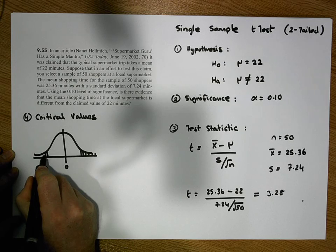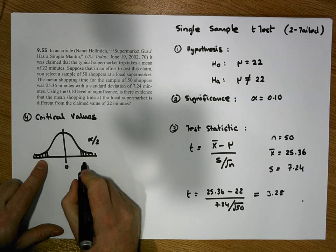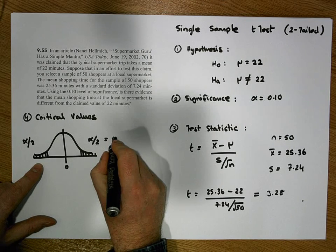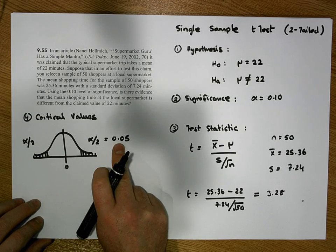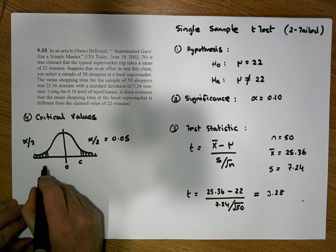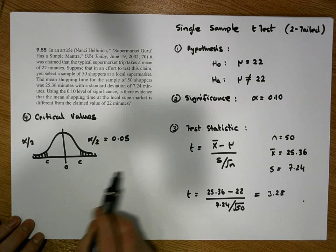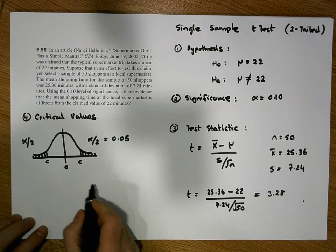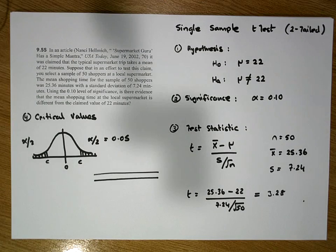We're assuming a t distribution, so our distribution is bell-shaped and centered on zero. It's a two-tailed test, so we have two tails. We take our significance level and split it in half — alpha/2 in each tail. Alpha/2 = 0.05, so our critical values are associated with 0.05 of an area in each tail. We use t distribution tables to find the critical value with 0.05 area in the right-hand tail.